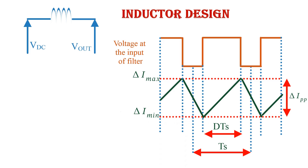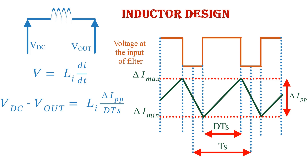We know that for any inductor, voltage is given by V = L·di/dt. Substituting all the values by looking at the waveform, we get: V_dc minus V_out equals L_i multiplied by delta I_pp divided by d·T_s, where T_s is the switching period.